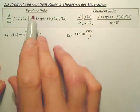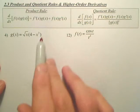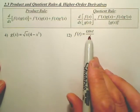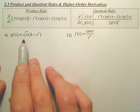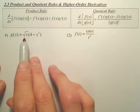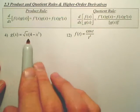For g of x, we're doing product or quotient. That is a product. For 12, it's a quotient. So for this problem, we could distribute the square root x to both these pieces, but I want to show you product rule.